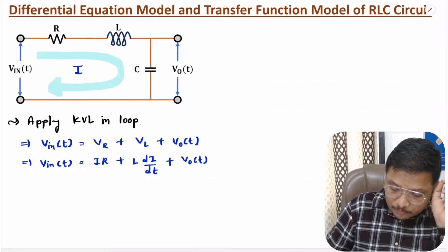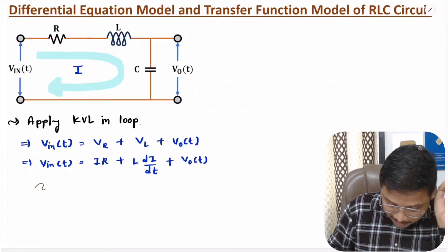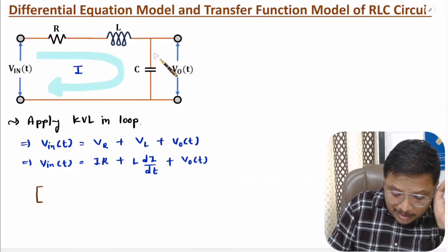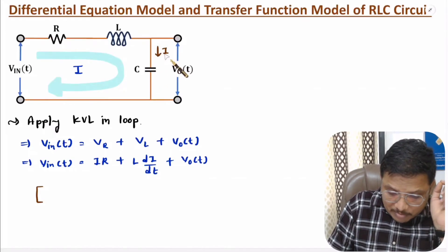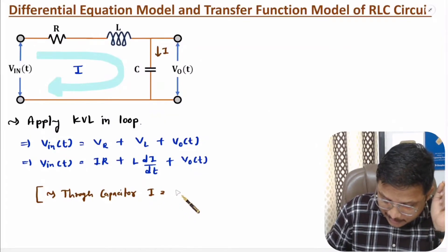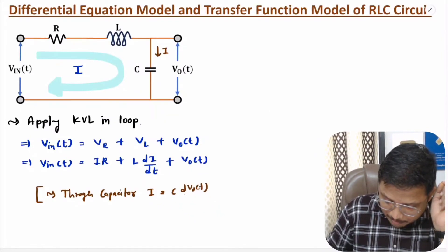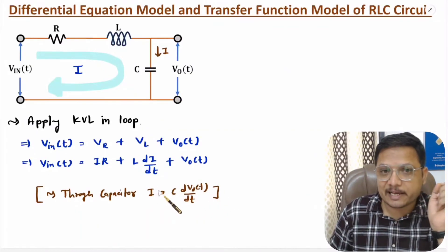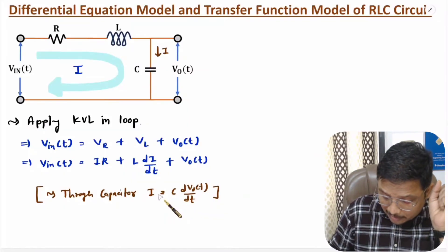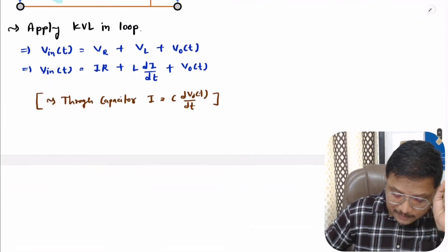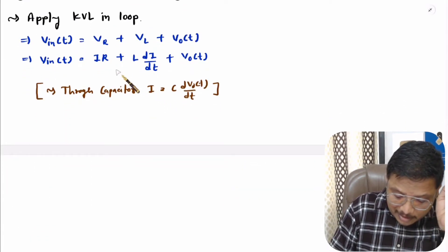Voltage across capacitor is (1/C) times the integral of I dt. Through the capacitor, current is I, so based on that we can identify the value of current I. Current I equals C times dV_out/dt. And voltage is (1/C) times integral of I dt, so current through capacitor is C dV_out/dt.